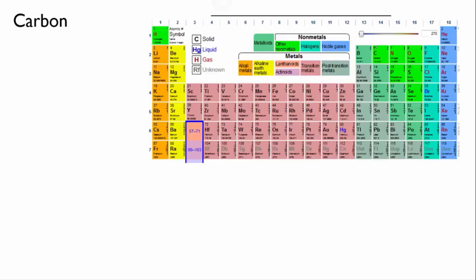We know that it's in group number four on the periodic table which means that it has four valence electrons. It's got six electrons overall. It's got intermediate electronegativity which means it forms covalent bonds. And because it's got four valence electrons it generally forms four covalent bonds.